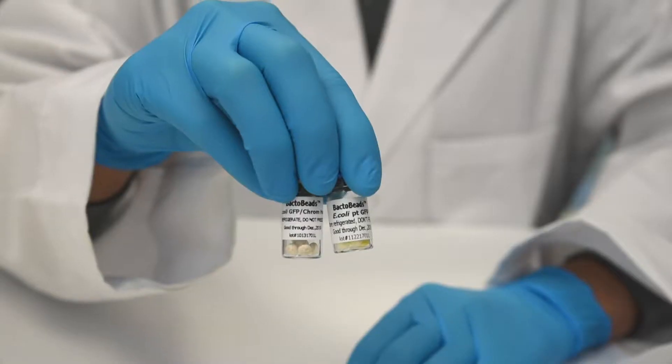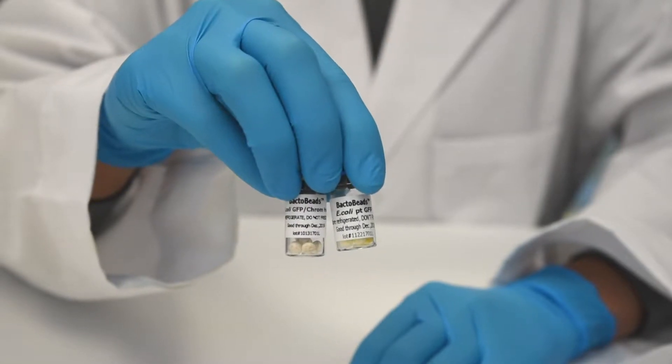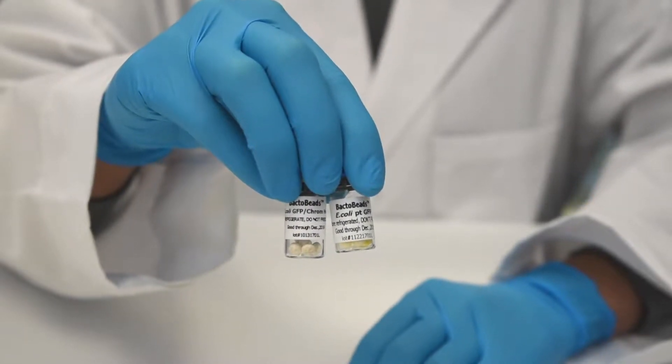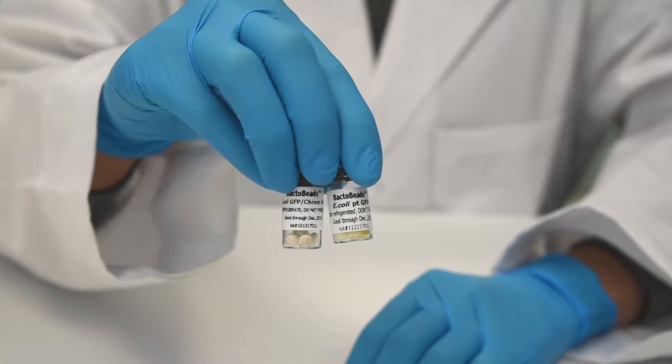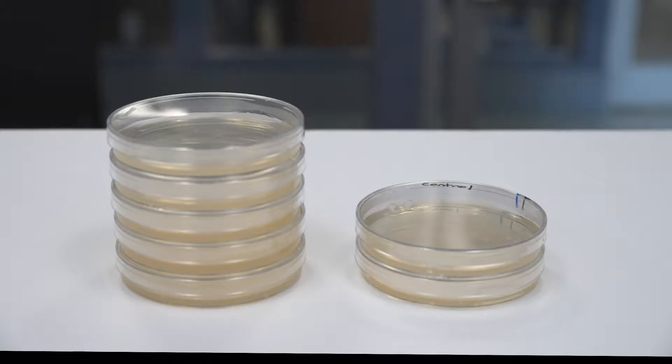For this prep, you will need vials of E. coli GFP Host and E. coli PT GFP Bacto Beads, 5 large petri plates containing LB agar, and 2 large control plates containing LB agar plus ampicillin and IPTG.